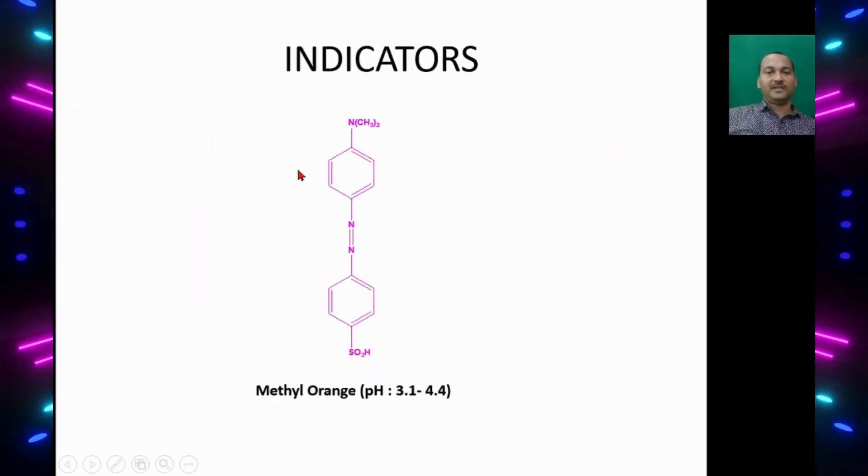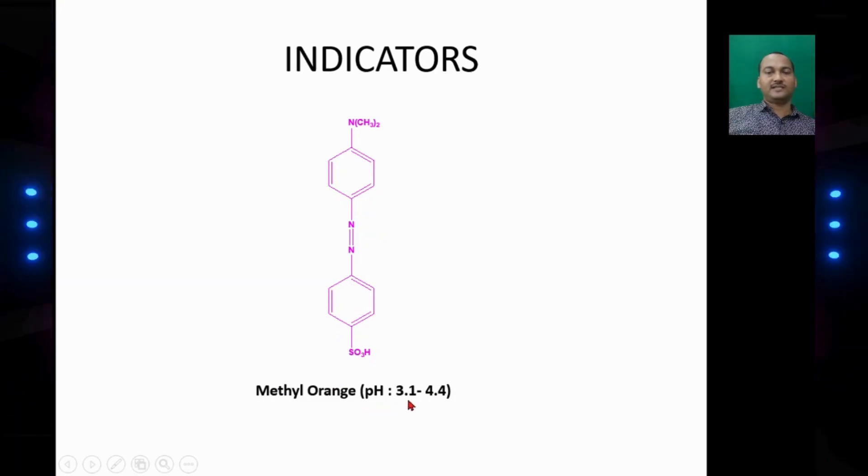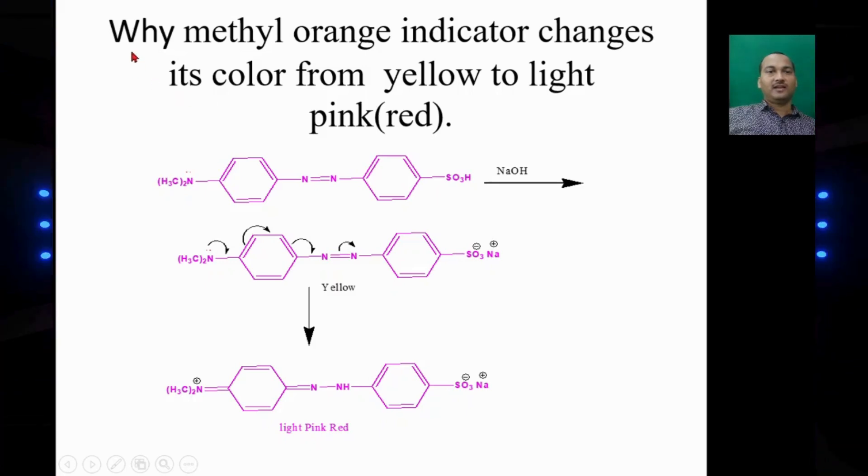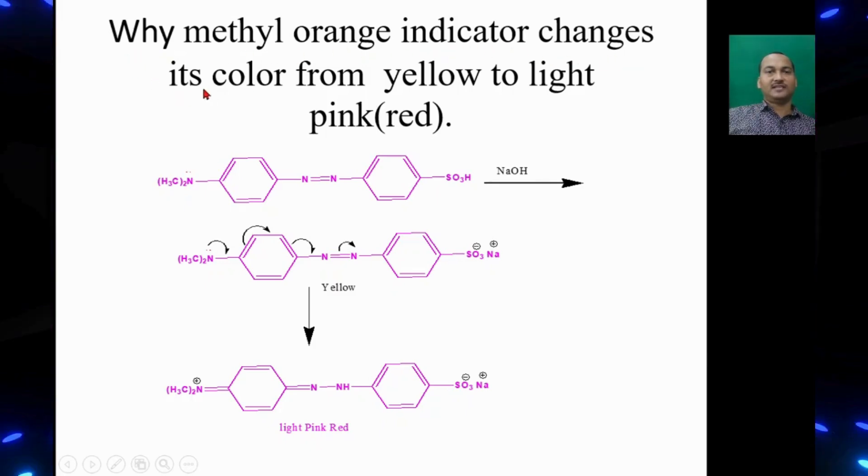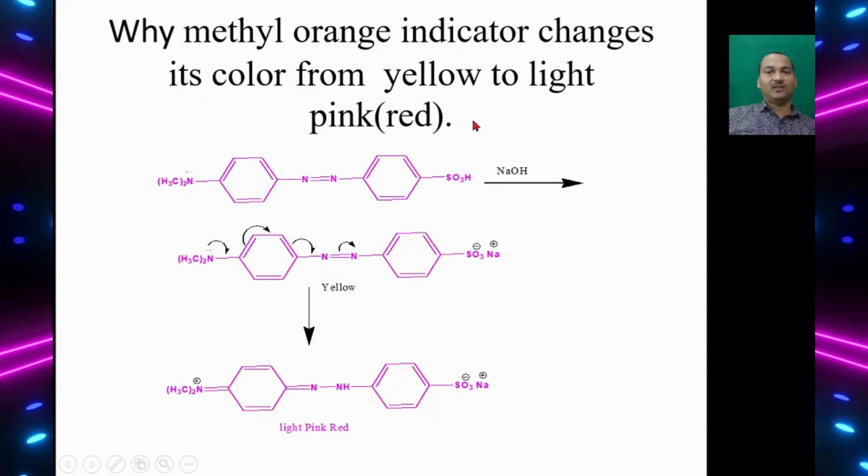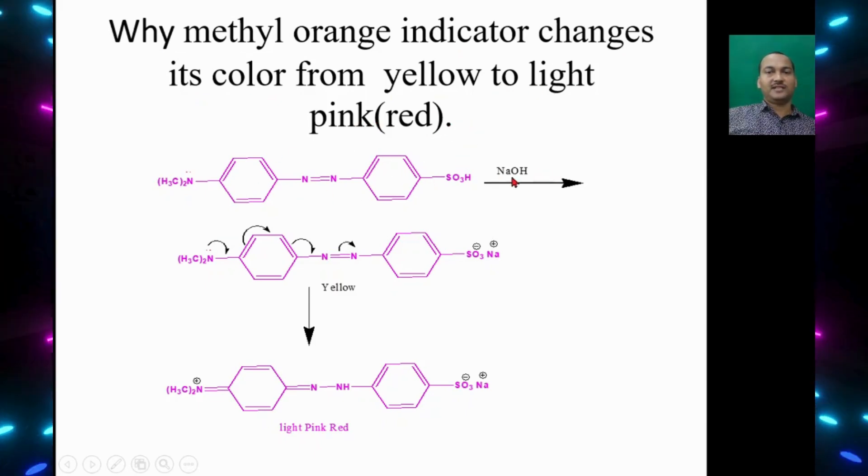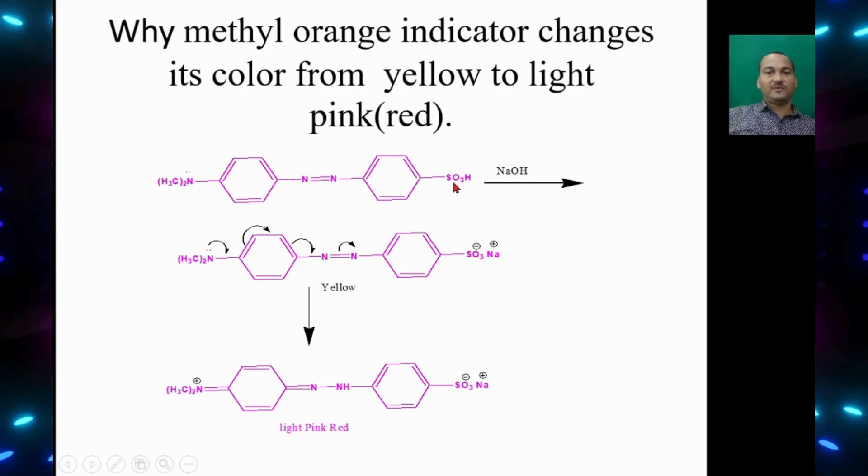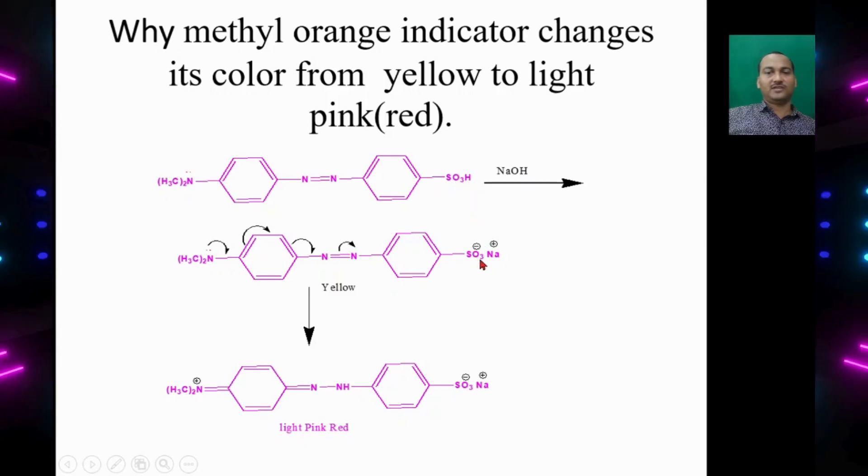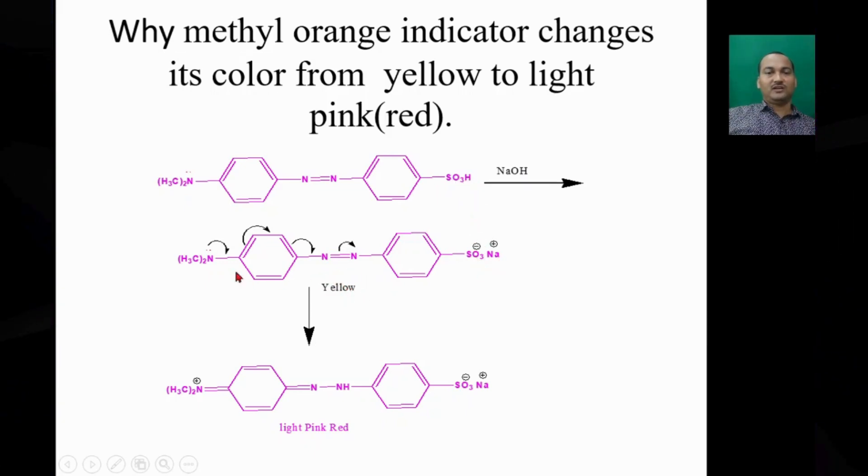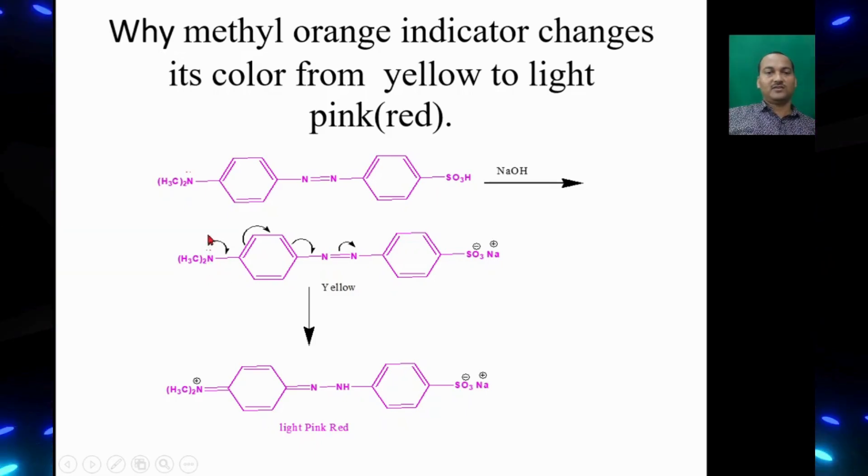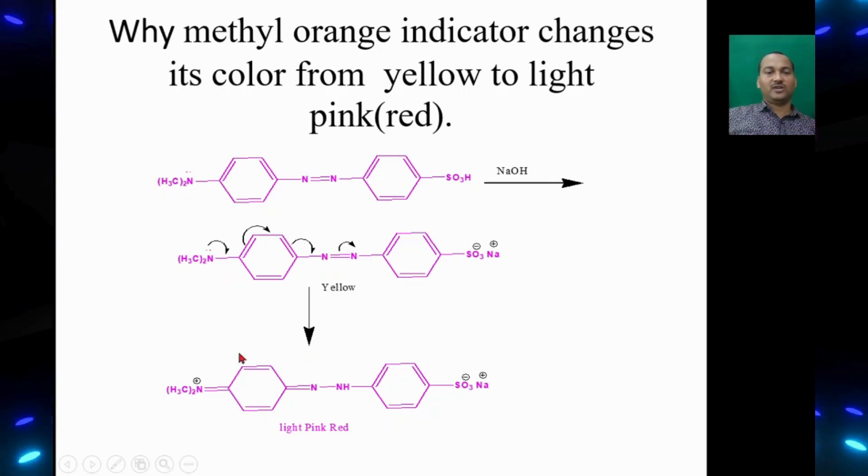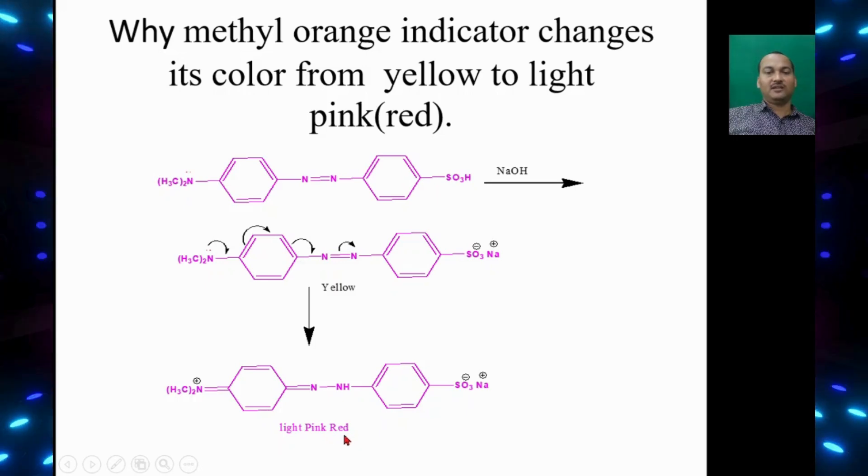This is the structure of methyl orange indicator which works in the pH range 3.1 to 4.4. Why does methyl orange indicator change its color from yellow to light pink red? In presence of base sodium hydroxide, the proton of SO3H becomes the sodium salt SO3Na which is yellow in color. The nitrogen has lone pair of electrons and undergoes resonance, from benzenoid structure to quinoid structure. That's why we get light pink red color.